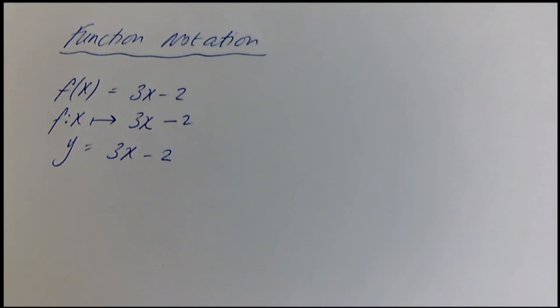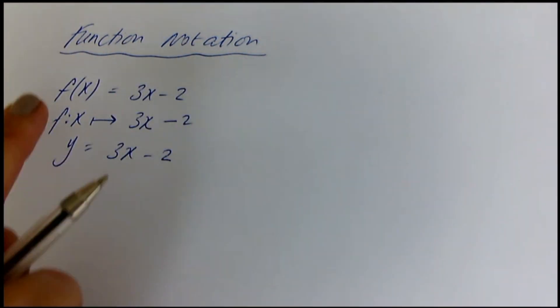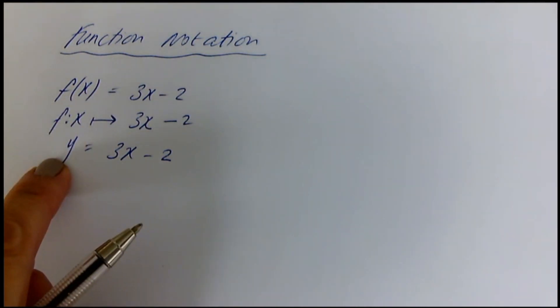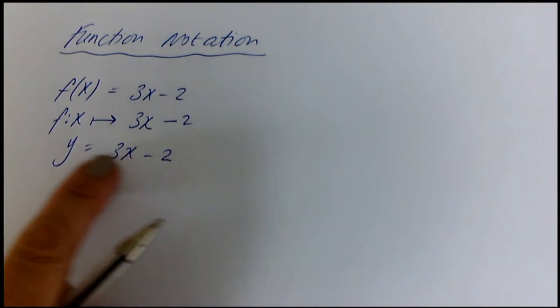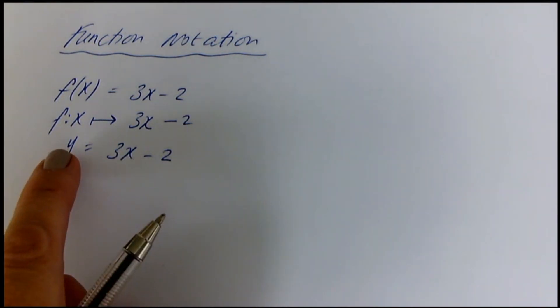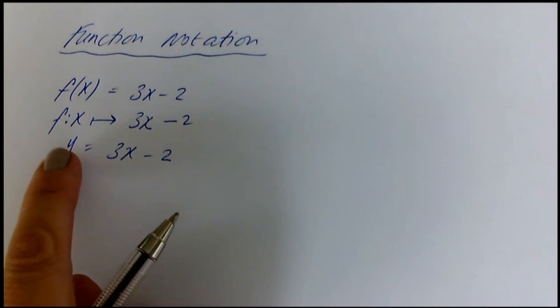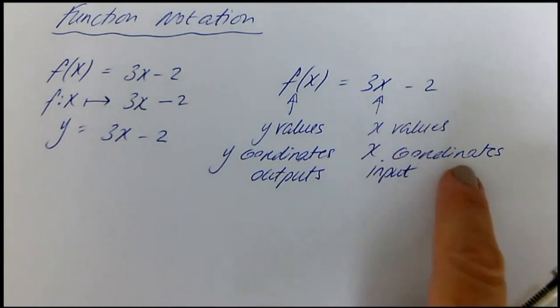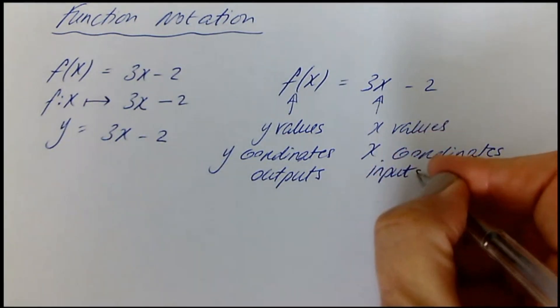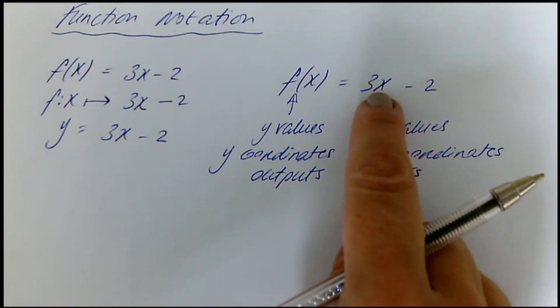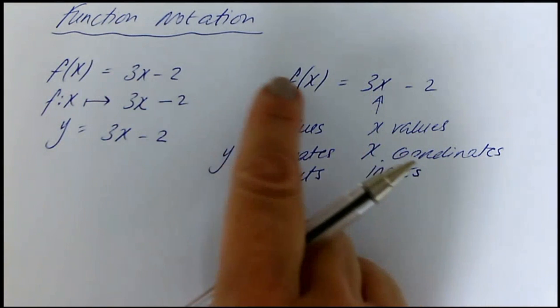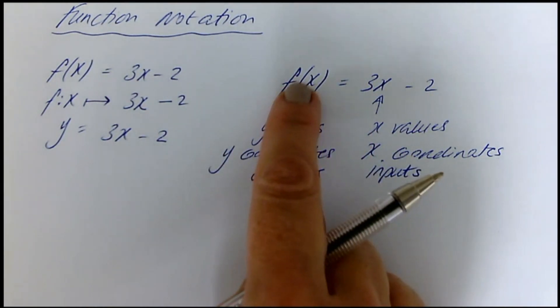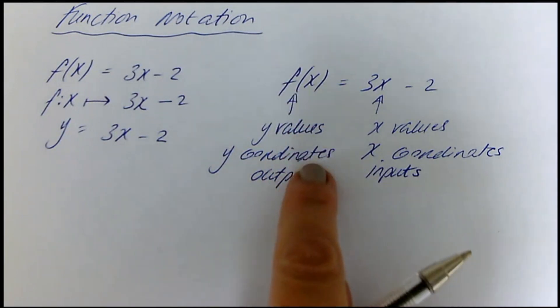In this video we're going to look at functions. Here are three different ways of stating a function — they all basically mean the same thing. A function describes the relationship between your x values and your y values, or another way of describing that: your inputs and your outputs. If you have some x values or inputs, when you substitute them in and do three times that x value take away two, you will get the result — the y values or outputs.